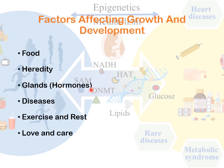Glands secrete hormones that are essential for our growth and development. The pituitary gland and thyroid gland influence the growth of individuals. The pituitary gland secretes growth hormone, which determines how tall or short an individual will be. Excess growth hormone can lead to gigantism, while a deficiency can lead to dwarfism. The thyroid gland secretes thyroxine, which is necessary for metabolism and essential for growth and development; its absence results in cretinism.